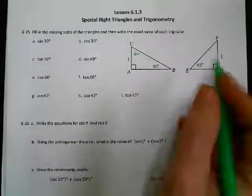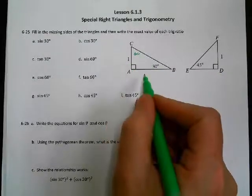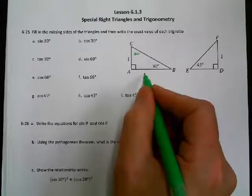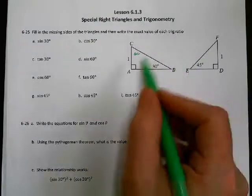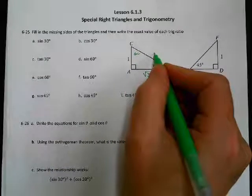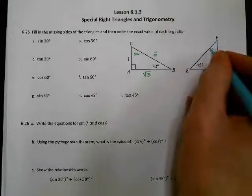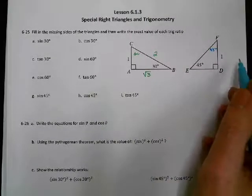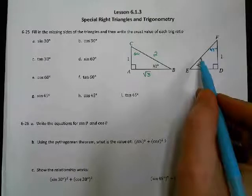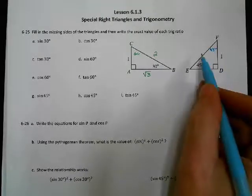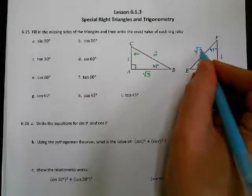Let's start with the 30-60-90 triangle. If this side is our a side, which is 1, then the a-root-3 side, our long leg, would be 1-root-3 or just root 3. And then our hypotenuse would be 2 times a, so 2 times 1 is 2. For our 45-45-90 triangle, our two legs are congruent, so this side is 1. The pattern is a, a, a-root-2, so since a is 1, the hypotenuse is root 2.